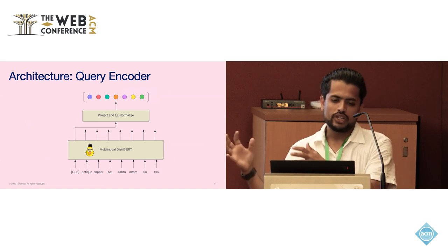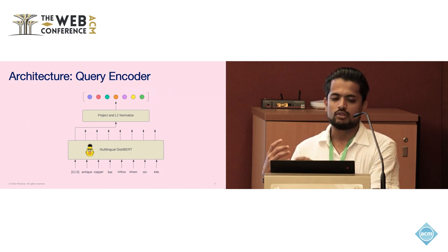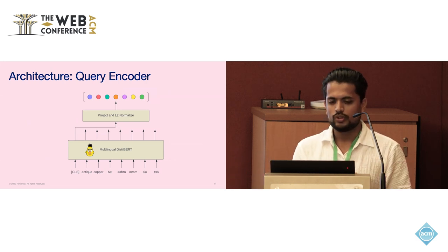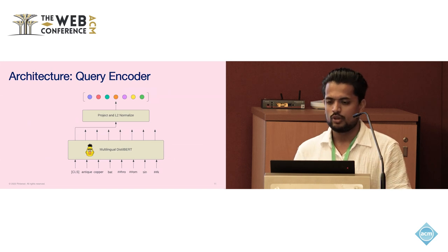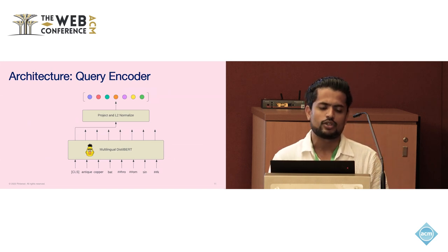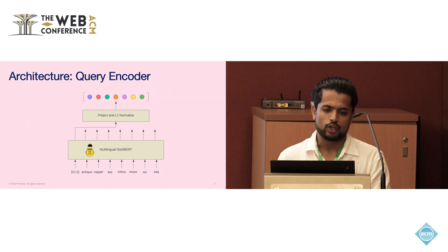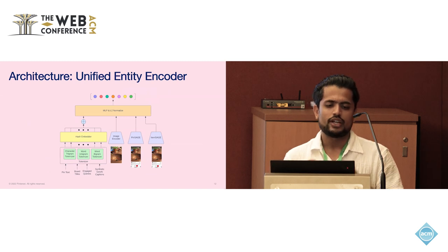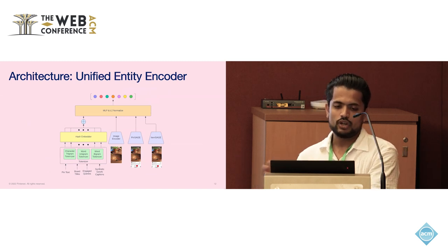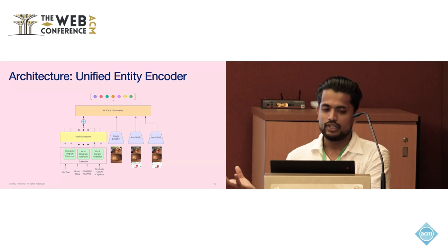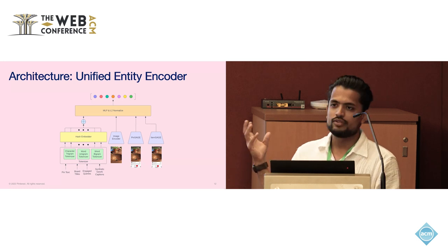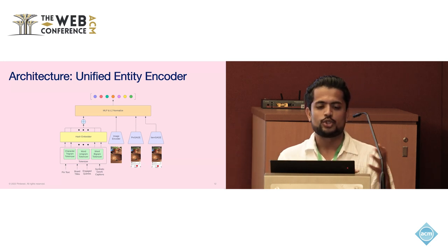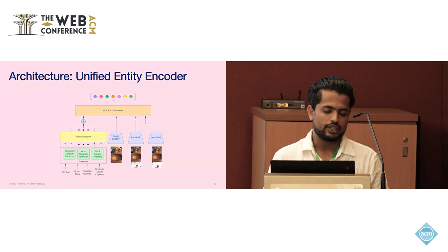For the architecture, the query encoder is based on the multilingual version of DistilBERT. We take the output corresponding to the CLS token, project it to a 256-dimension vector, and normalize it for unit norm. Empirically, we found that fine-tuning all layers of DistilBERT works best given the data scale we're operating at. For pin and product encoders, we use a single unified encoder for both. In cases where features are defined for one entity but not the other, we substitute them with zero, ensuring consistent data input across all examples.